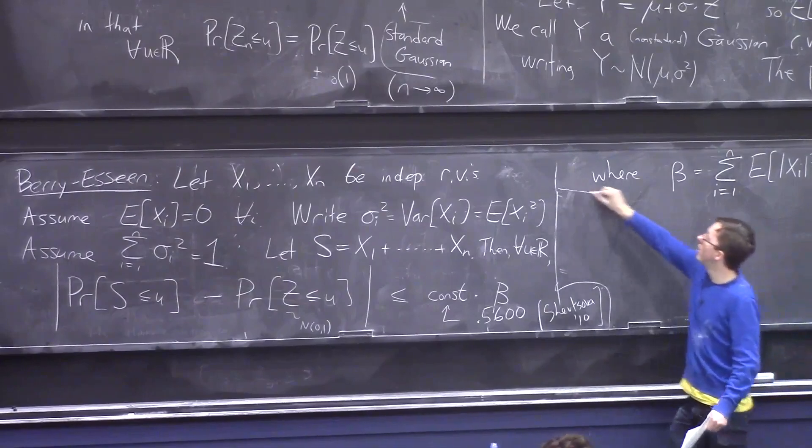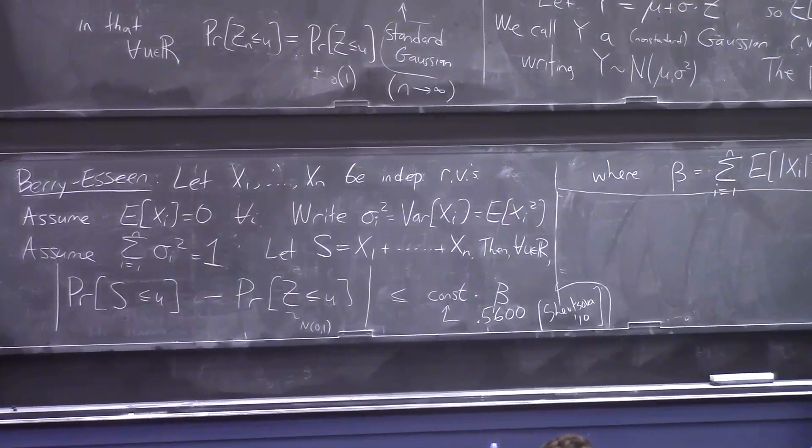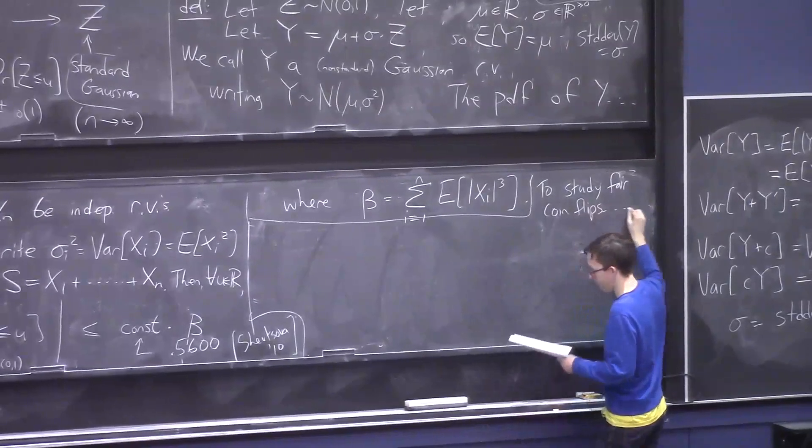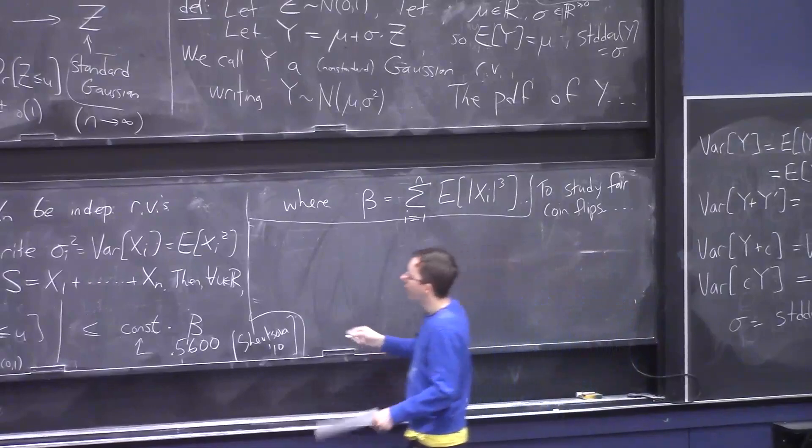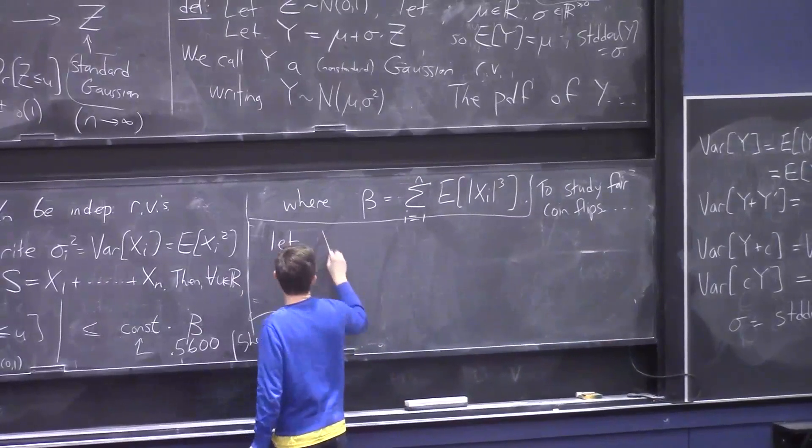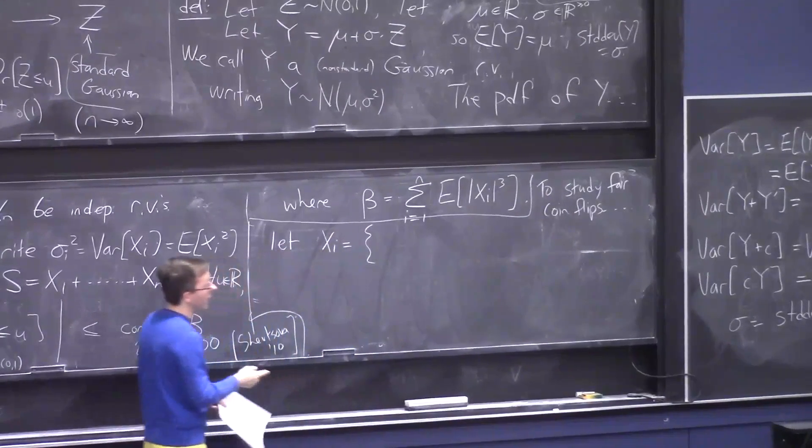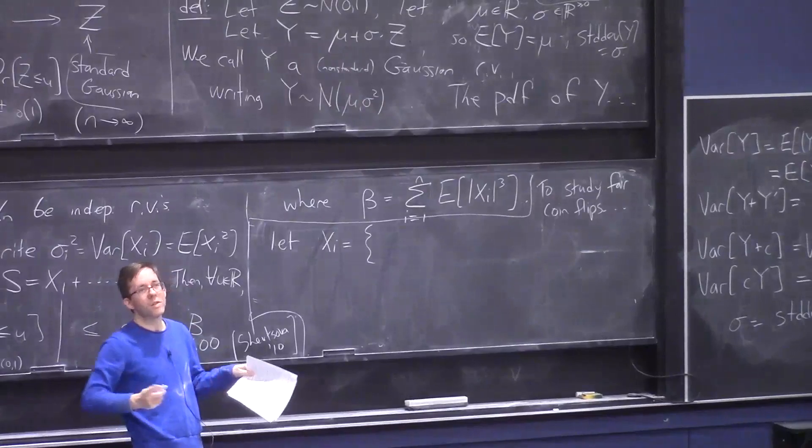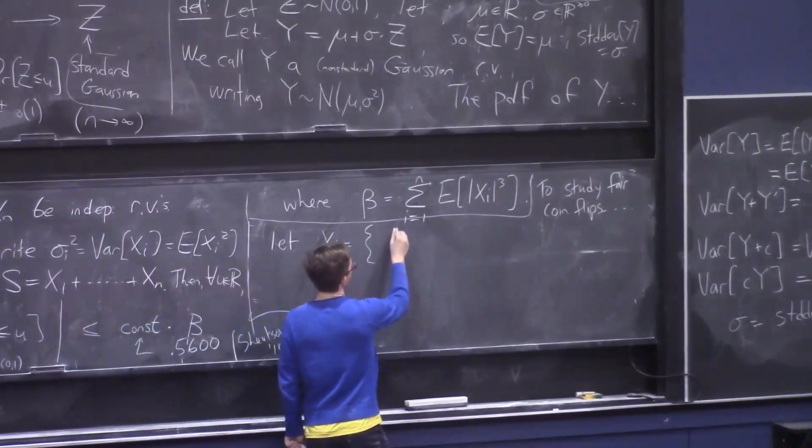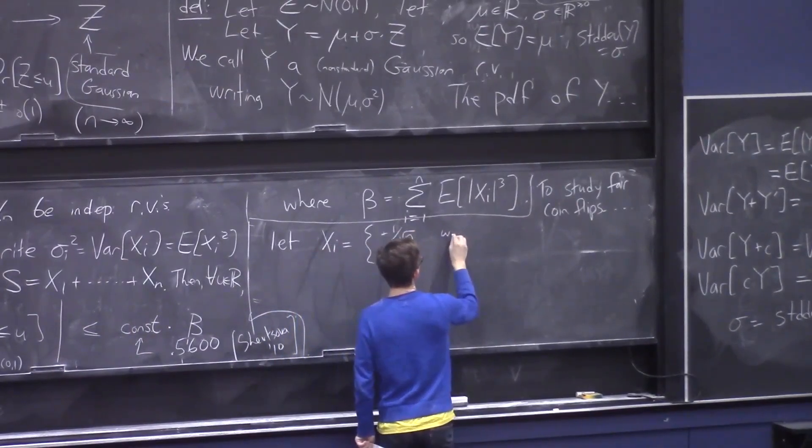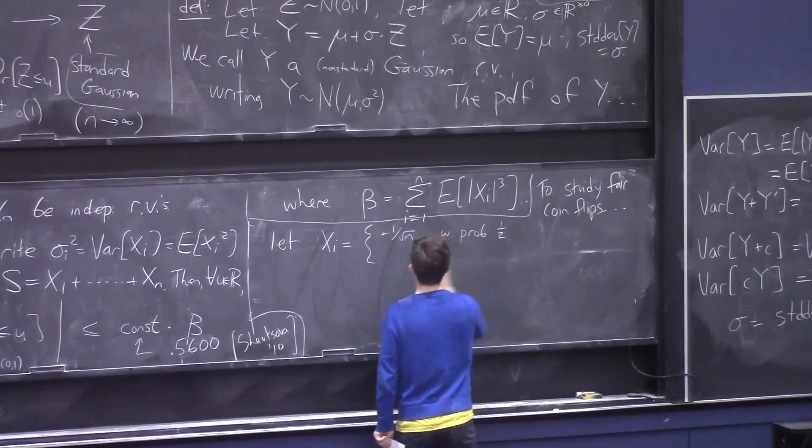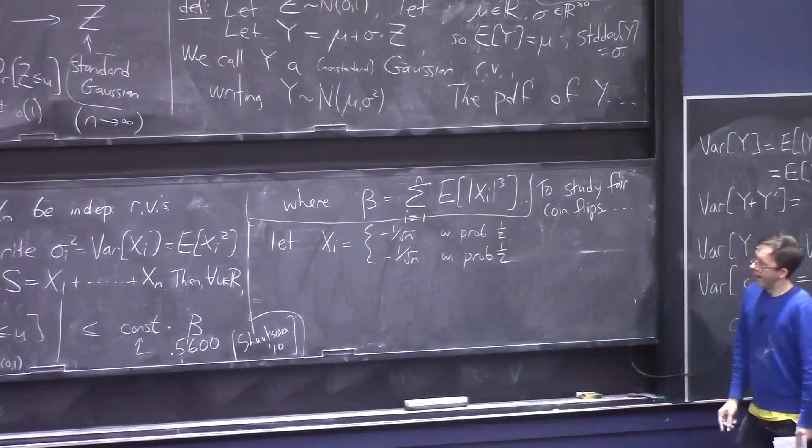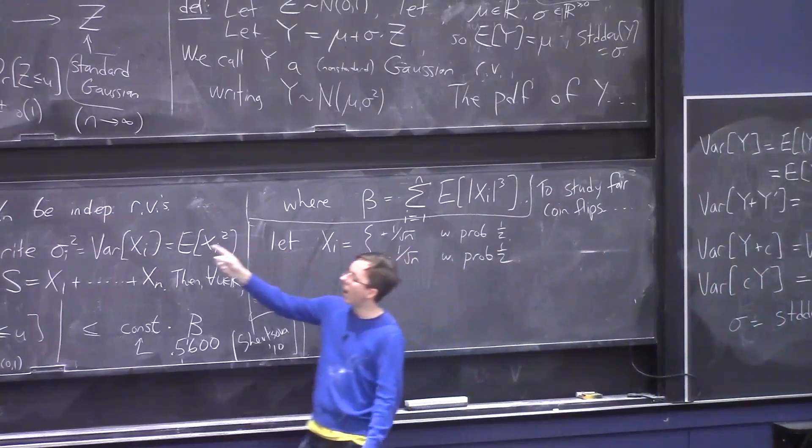So, let's say we want to use this theorem to study coin flips, to study coin flips, fair coin flips, as we did at the beginning. So, to set it up, we would let Xᵢ be, just like we did at the very beginning, we decided it was good to look at, instead of sums of 0, 1 random variables, look at sums of plus or minus 1 random variables, and also divide by root n. So, we're going to let Xᵢ be the random variable, which is 1 over root n, with probability 1 half, and minus 1 over root n, with probability 1 half.